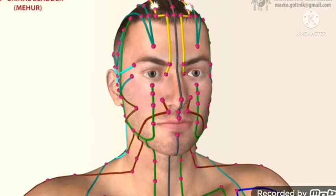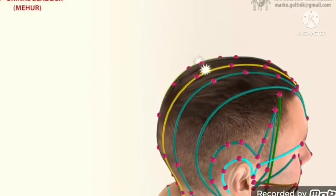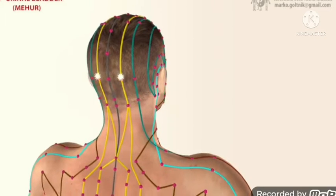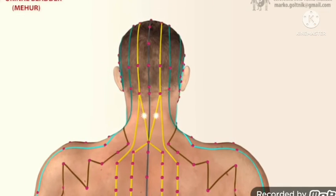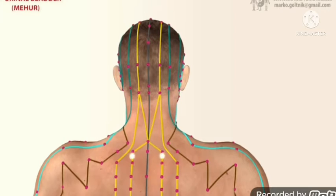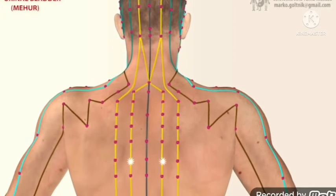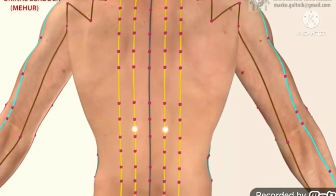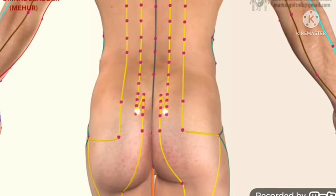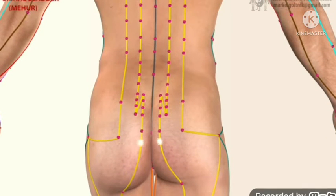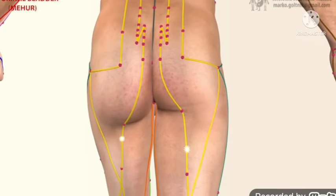It starts from the corner of our eyes and then from the head it goes back. It goes straight from the back. These are all our back shu points. The red dots which you are seeing, and it goes up to our knees.